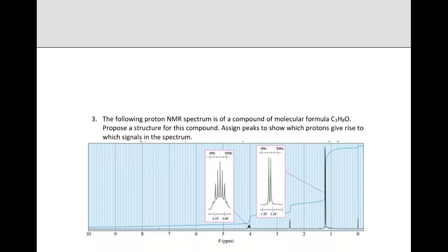Question 3. The following proton NMR spectrum is of a compound of molecular formula C3H8O. Propose a structure for the compound. Assign peaks to show which protons give rise to which signals in the spectrum.